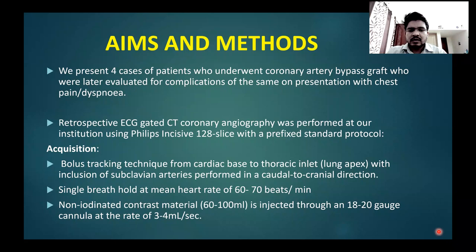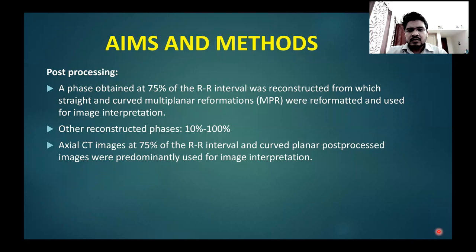Retrospective ECG-gated CT coronary angio was performed at our institution using a Philips Incisive 128-slice CT with a standard protocol. Acquisition using bolus tracking technique from cardiac base to thoracic inlet, i.e. lung apex, with inclusion of the subclavian arteries, performed in a caudal to cranial direction. Single breath hold at a mean heart rate of 60–70 beats per minute. Non-iodinated contrast material was injected through an 18–20 gauge cannula at the rate of 3–4 ml per second. Post-processing: a phase obtained at 75% of the RR interval was reconstructed, from which straight and curved multiplanar reformations were reformatted and used for image interpretation.